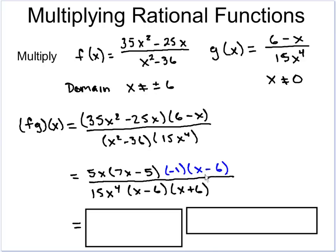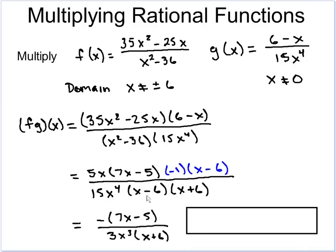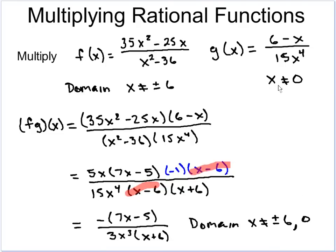Now you can see why we wanted (x minus 6) rewritten — because we have it on the top and the bottom, which allows us to cancel those out. In the reduced fraction, the (x minus 6) is gone. For the numerical coefficients, 5 over 15 reduces to 1/3, staying in the denominator. And x over x⁴ is x³, also staying in the denominator. The negative sign stays on top, and (7x minus 5) stays in parentheses — no need to distribute it. The domain is all restrictions from the initial functions: x cannot equal plus or minus 6 or 0.